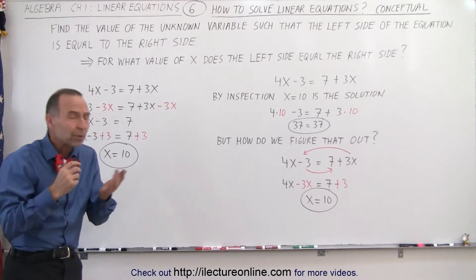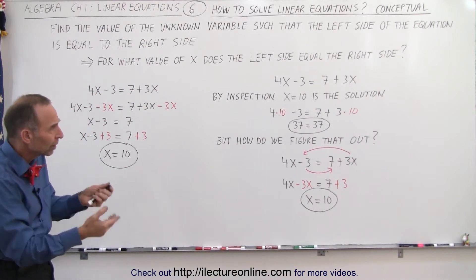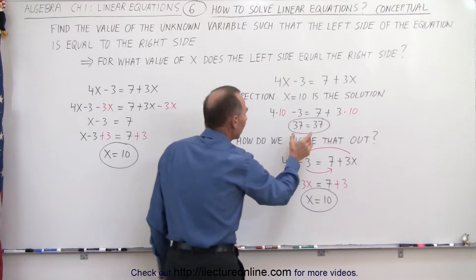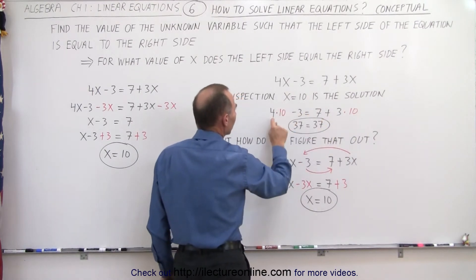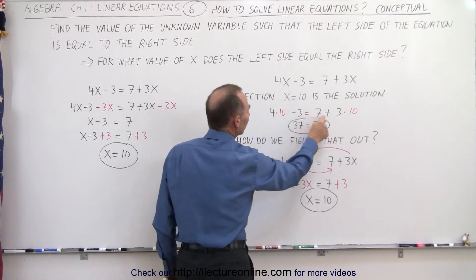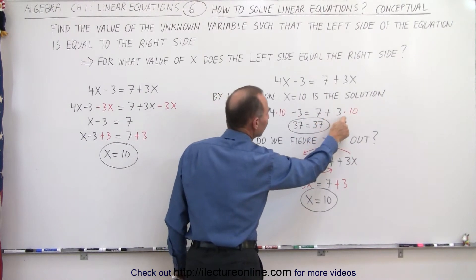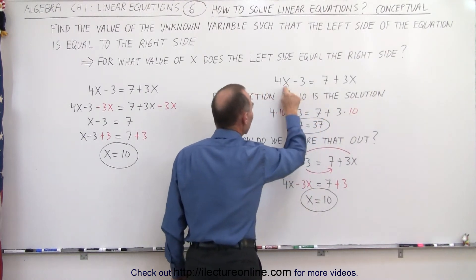And so how do we do that? Well, by inspection we can realize that if x equals 10, the left side equals the right side, because 4 times 10 minus 3 is equal to 7 plus 3 times 10.